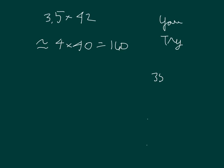Did you write out a standard algorithm? 35 tenths times 42. 2 times 5 is 10, 0, regroup a 1. 2 times 3 is 6, plus 1 is 7. Place a 0. 4 times 5 is 20, 0, regroup a 2. 4 times 3 is 12, plus 2 is 14.